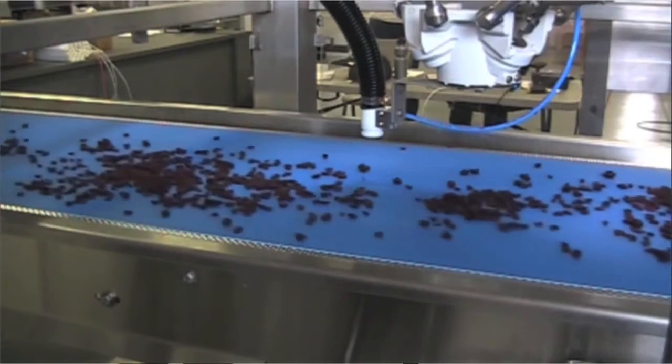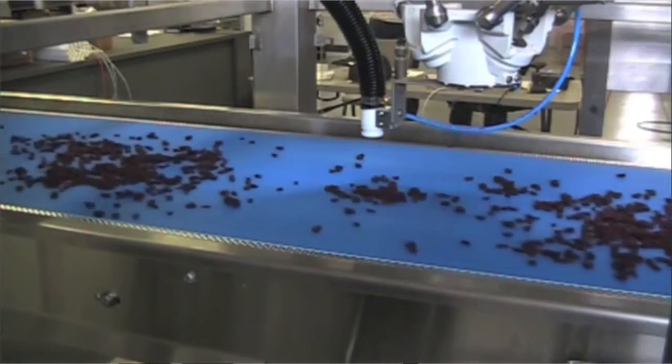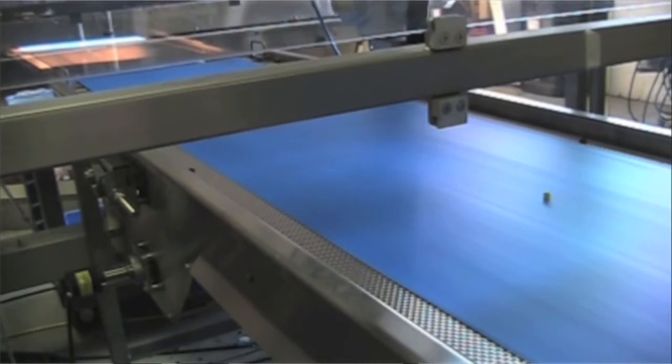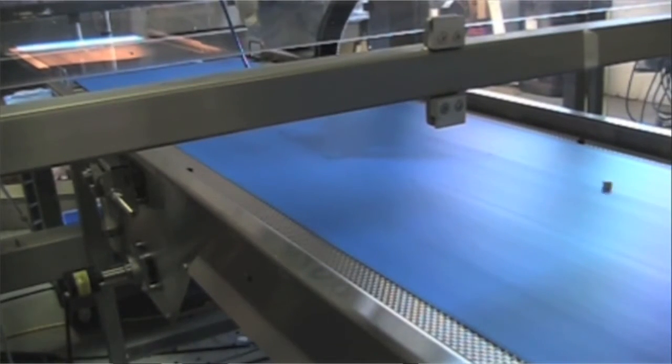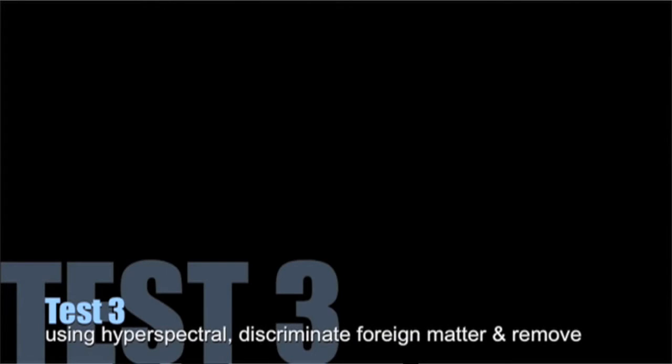What Ocean Spray does is they take these trucks full of 40,000 pounds of raw cranberries, and they bring them into their receiving stations. What they need to do from a process perspective there is decide, based on the quality of the berry, how they're going to direct these products to their respective product lines for processing.